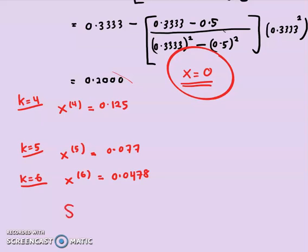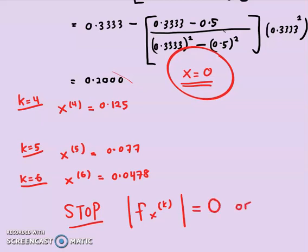You can stop the iteration when the magnitude of f(x_k) equals 0, or when |f(x_k)| is less than a very small epsilon. So that's all for the secant method. I'll see you in the next video on the false position method. Bye.